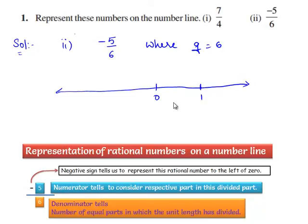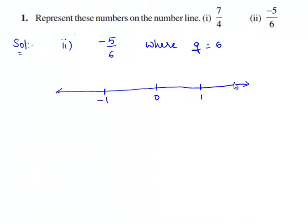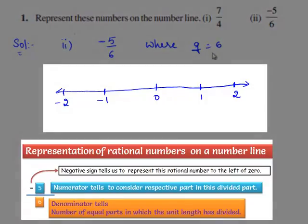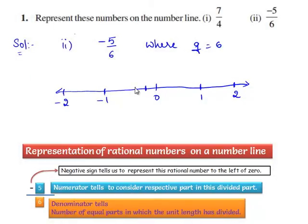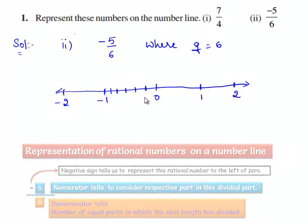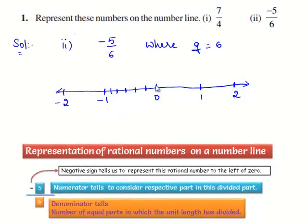We mark 0, 1, minus 1, 2, and minus 2 on the number line. Since q is equal to 6, we divide 0 to minus 1 into 6 equal parts. Each part corresponds to minus 1 by 6. Now, we reach on to the fifth part from 0 onto the left side of the number line. So, this is minus 5 by 6.